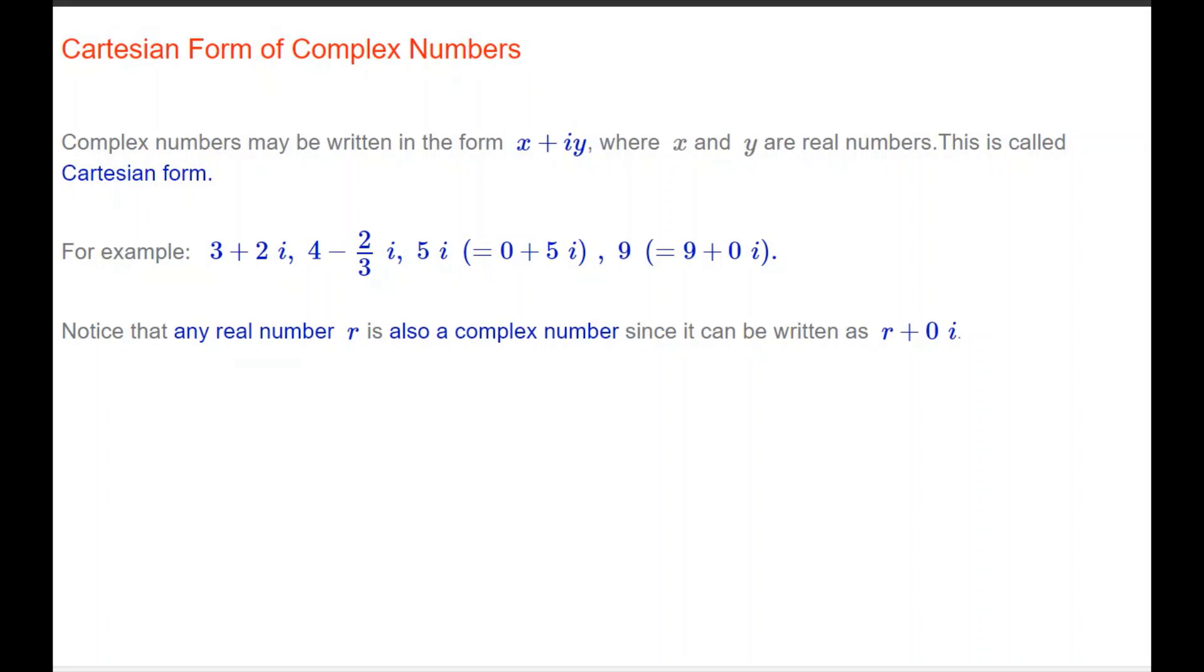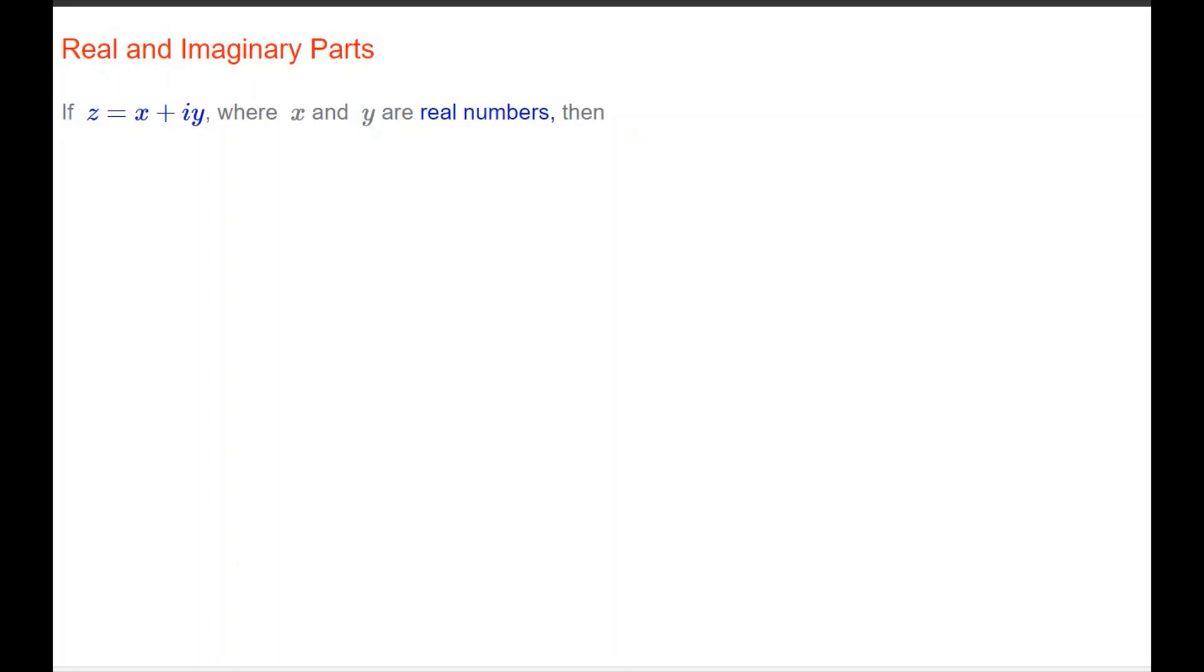Notice that any real number r is also a complex number, because it can be written in the form of r plus 0i. If z equals x plus iy, where the x and y are real numbers, the x is given a special name. It's called the real part of z. It's denoted by capital Re with the z in brackets, and the y is called the imaginary part of z. It's denoted by capital Im with the z in the brackets. So, if z is 3 plus 2i, then the real part of z is 3, and the imaginary part of z is 2.